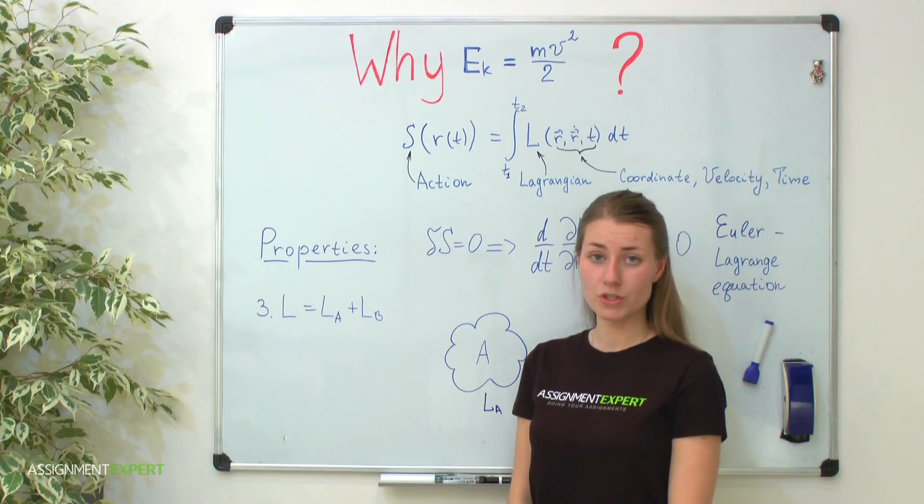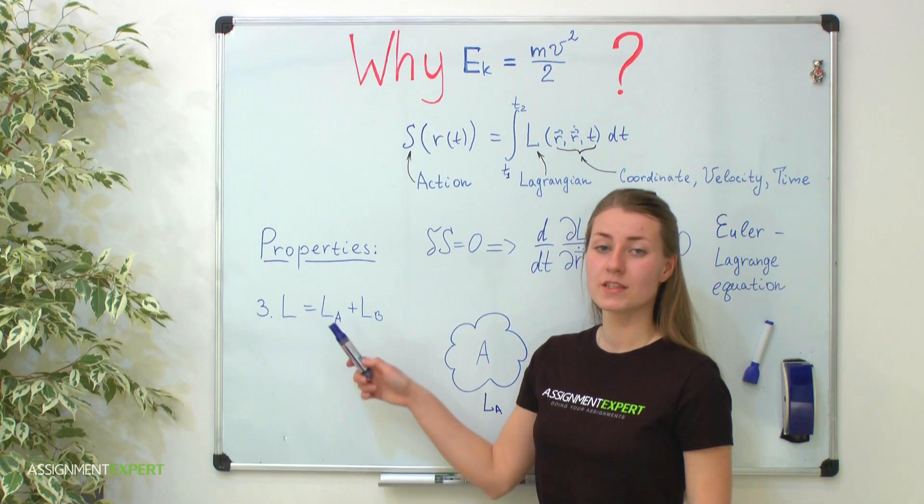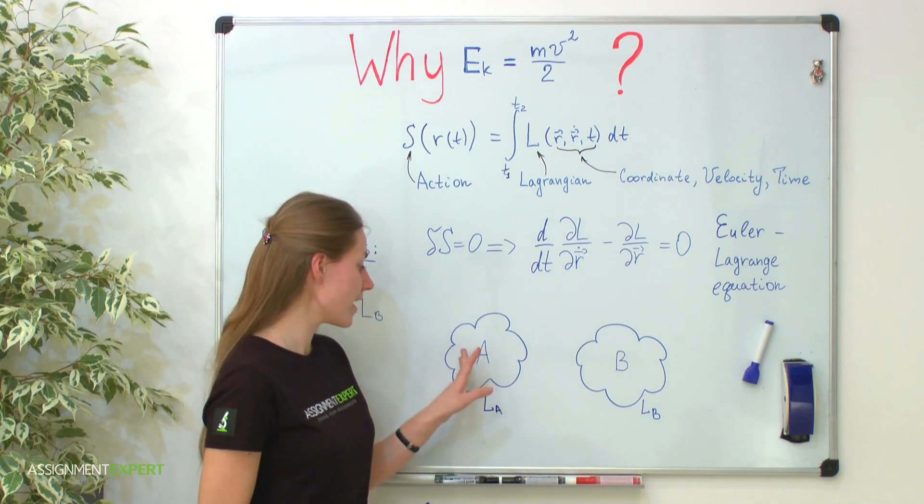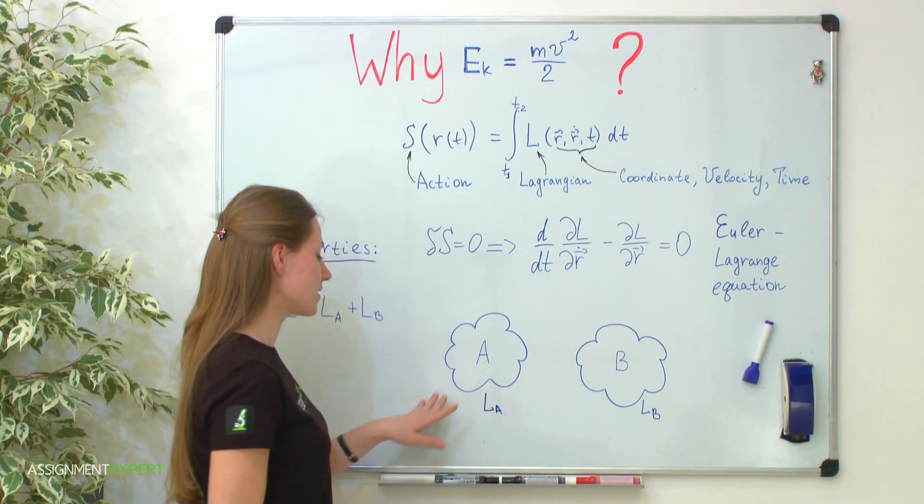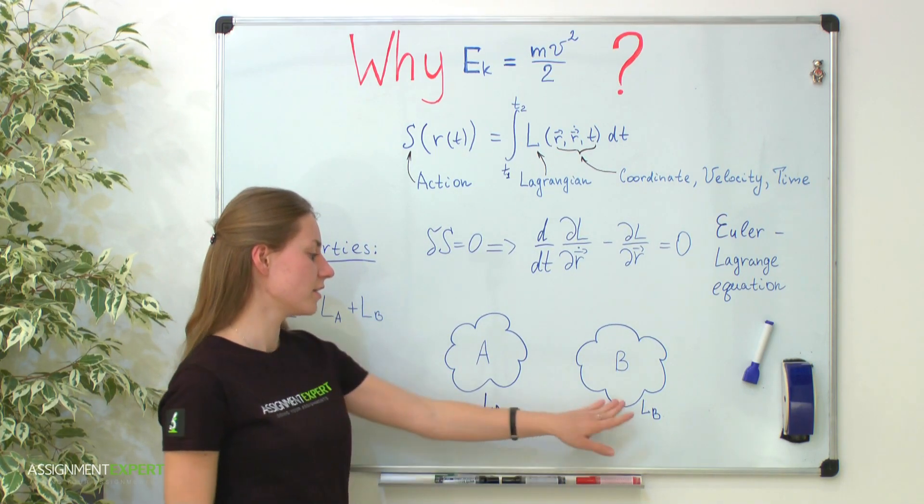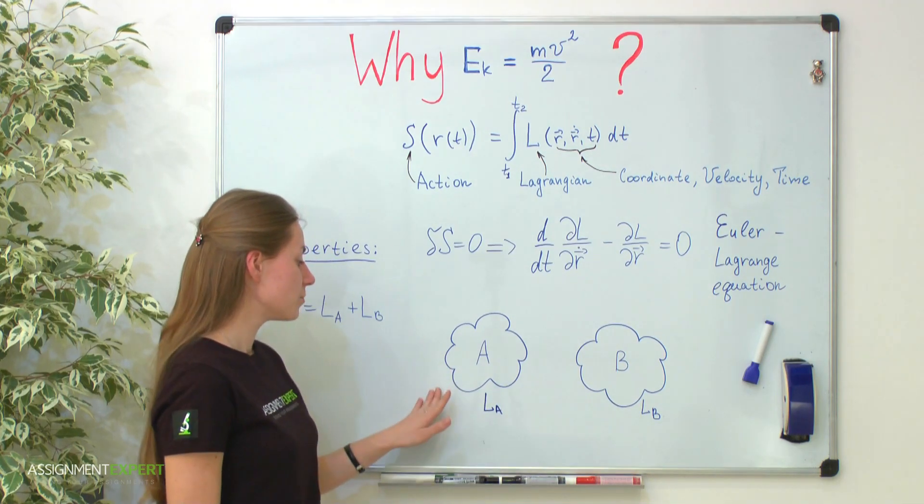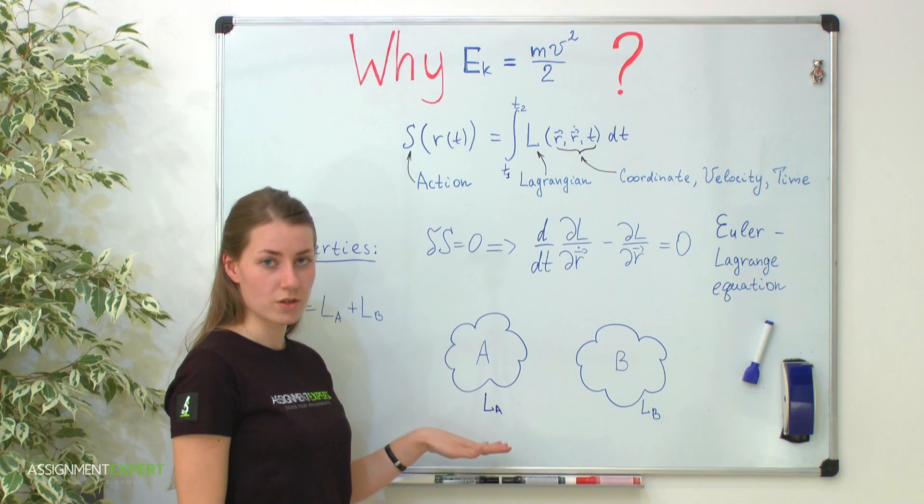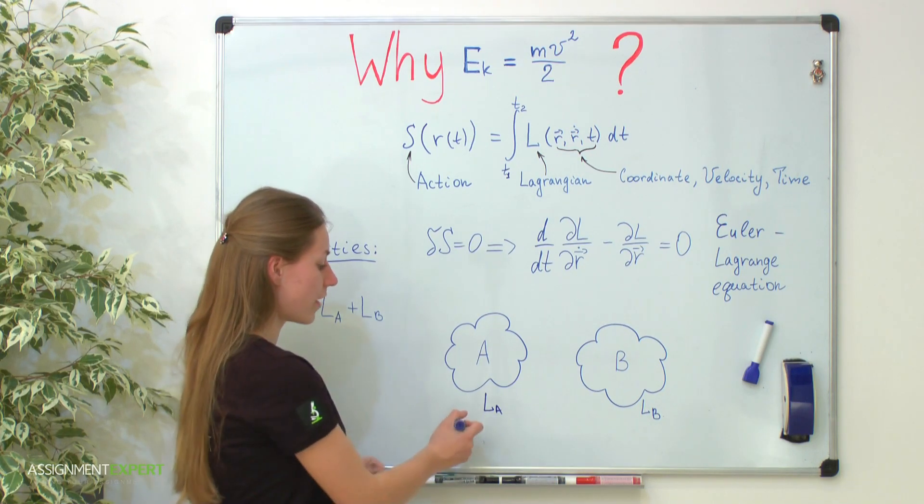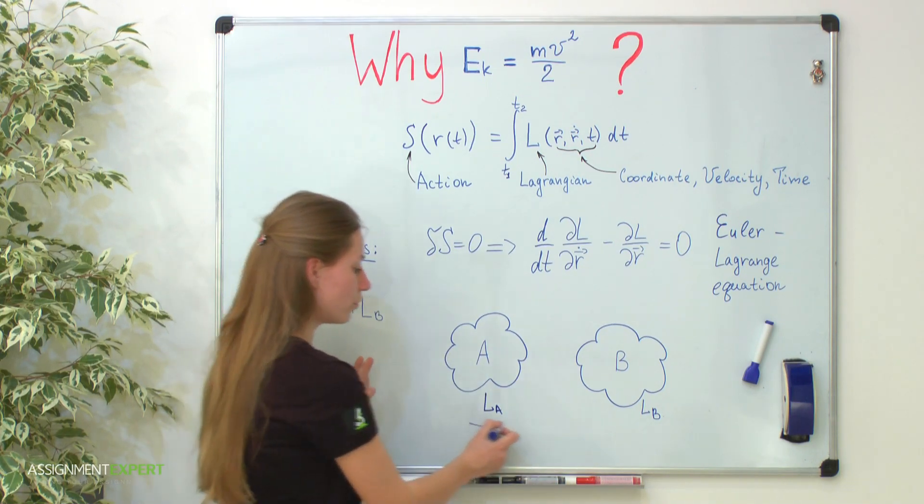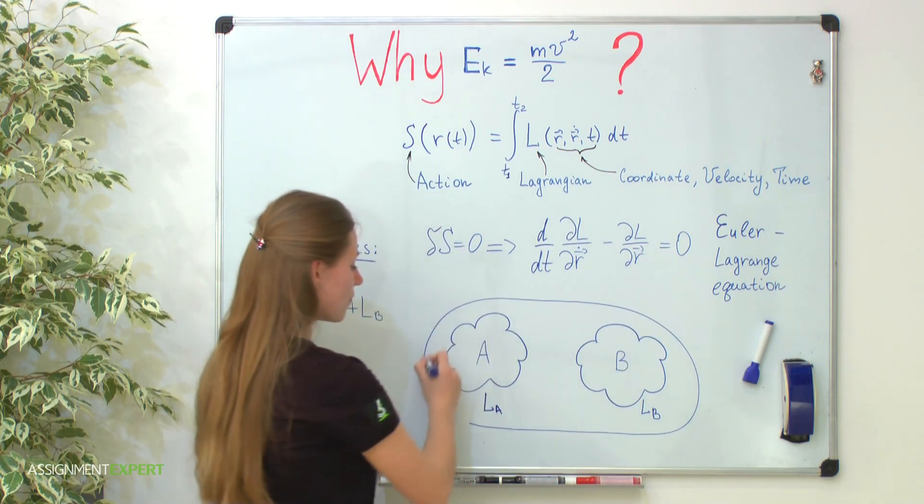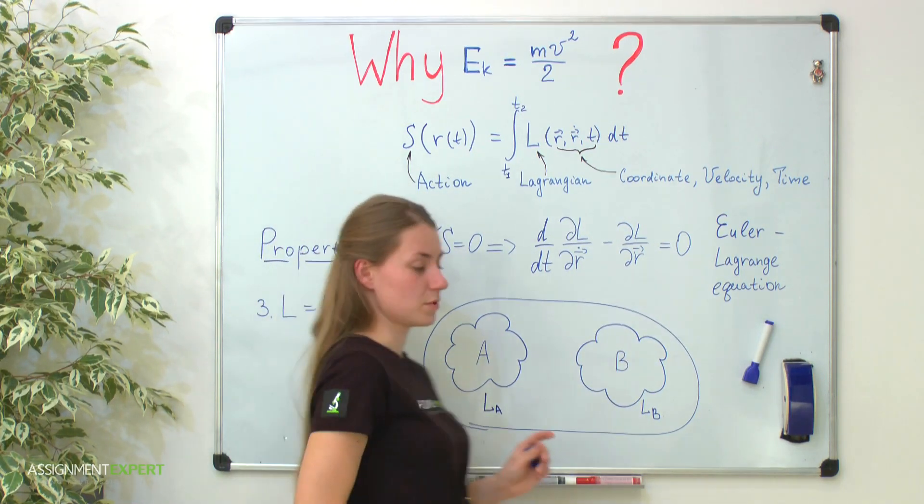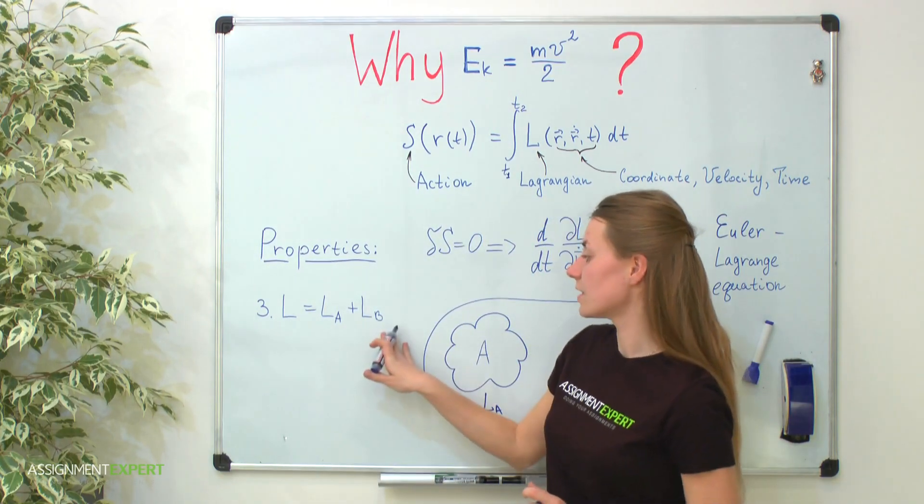And the last property of the Lagrange function is that it is an additive function. Consider two systems, say LA and LB. This system has Lagrange function LA and this LB. Suppose that these systems are closed and not interactive with each other. Then, if you want to find a Lagrange function of a full system, it will be simply a sum of Lagrange functions of these small two systems, say LA plus LB.